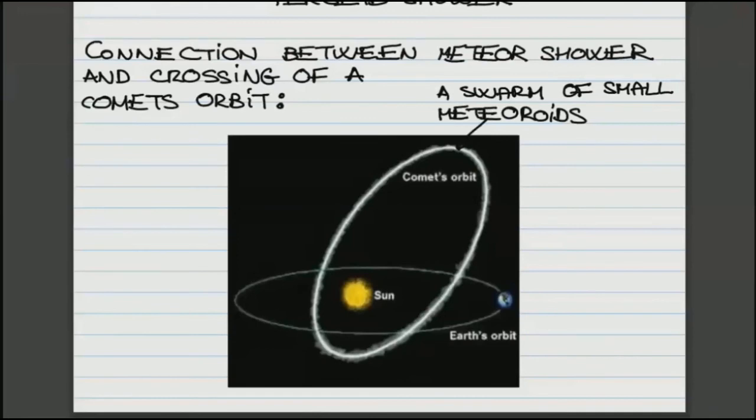So as it happens, Earth can cross the orbit of a comet. It doesn't cross the orbit of every comet, but in some cases, it does cross the orbit of the comet. And when that happens, of course, the Earth will strike more meteorites. And as a result, they will be more frequent. We see these so-called meteor showers.